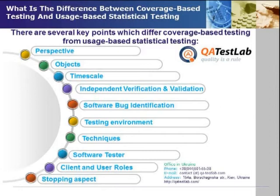These key points include: perspective, objects, timescale, independent verification and validation, software bug identification, testing environment, techniques, software tester, and client and user roles, as well as the stopping aspect.